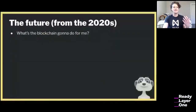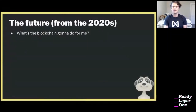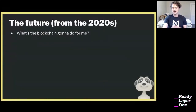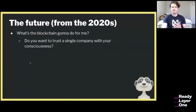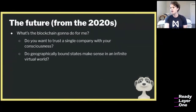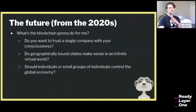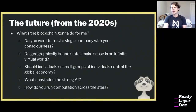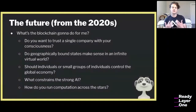That leads me to ask: what is blockchain going to do for you in the future? A lot of the narrative around blockchain has fallen away. If we have consciousness uploaded, do you really want to trust a single company with it? Do geographically bound states even make sense in an infinite virtual world? Should small groups of individuals control the global economy? What constrains a strong AI? How do you run computation across the stars? This is all very speculative — I'm doing that on purpose.